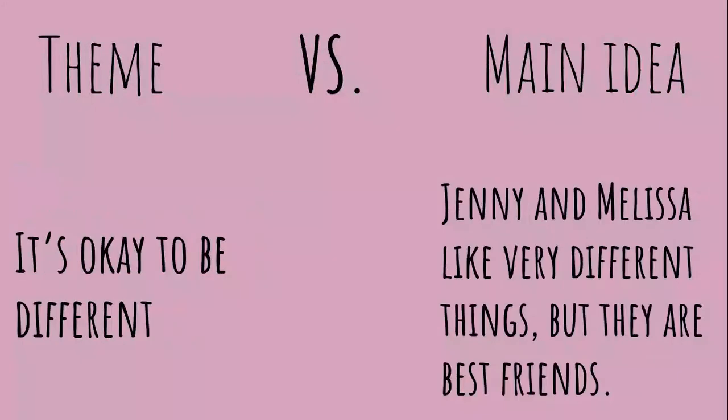So for example, a theme could be: it's okay to be different. Now, if you were to read a passage, the main idea of that passage might be: Jenny and Melissa like very different things, but they are best friends. That would be the main idea. The theme of that passage would be: it's okay to be different. When other people read this, they can relate to that. But if they read the sentence about Jenny and Melissa specifically, they can't relate because it's specifically about those characters. So when you write theme, keep it open and don't talk about specific characters.